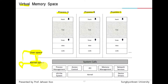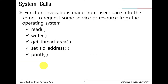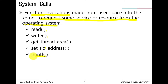What are system calls? System calls are function invocations made from user space into the kernel to request some services or resources from the operating system. For example, the read function, write function, get thread area, and so on. There are about 380 system calls in the Linux system.